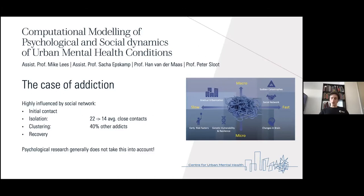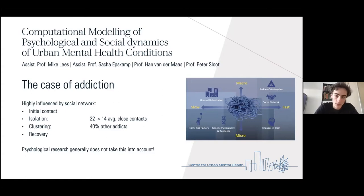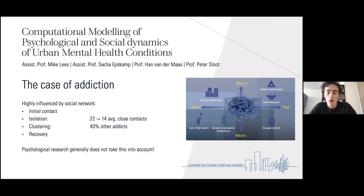In my first year I mainly caught up on psychology — I did a literature review on computational models of addiction from both the psychological field and the social science field. What you see is that these are really quite disjoint: psychology does not take social interactions too much into account, at best it's like a covariance, while social science looks at the spread as if it were a contagious disease, not really taking the complexities of the psychological aspects into account.